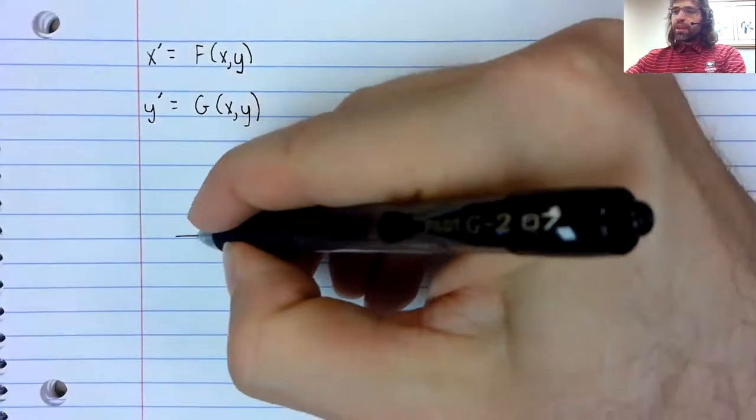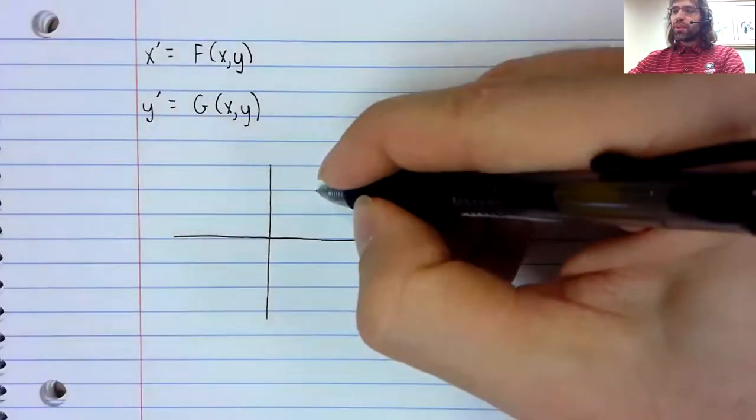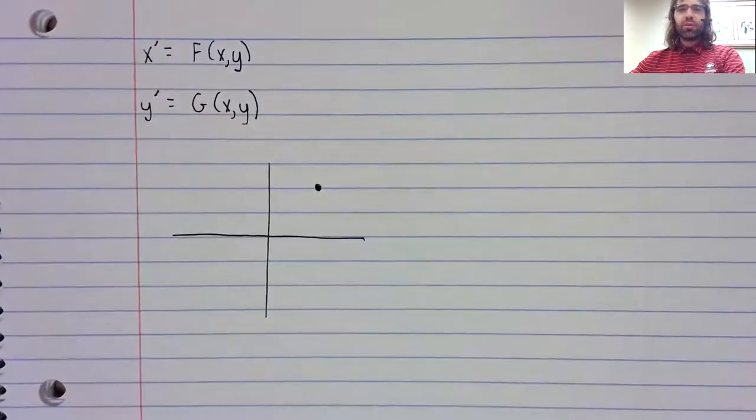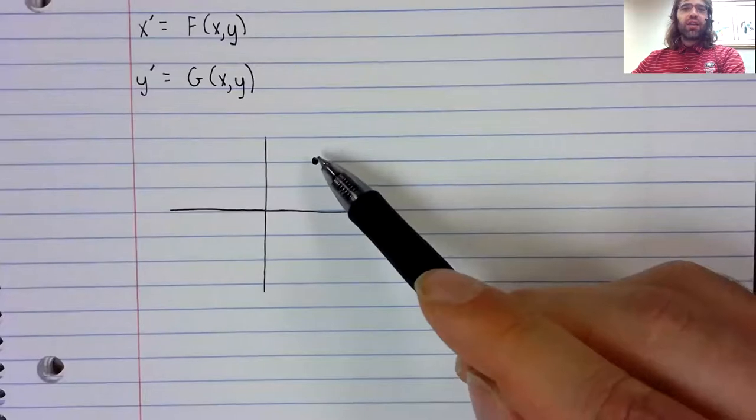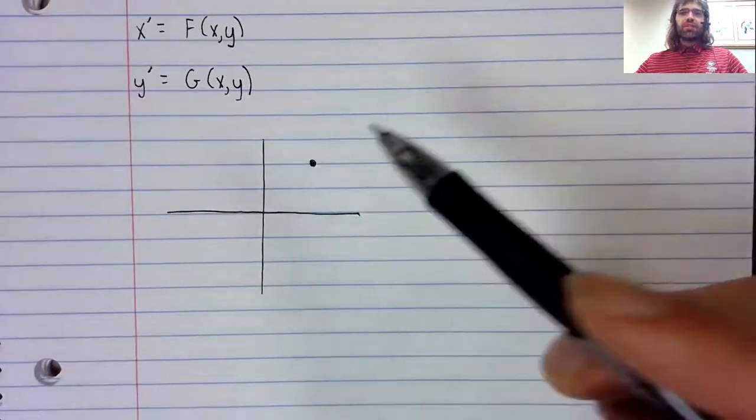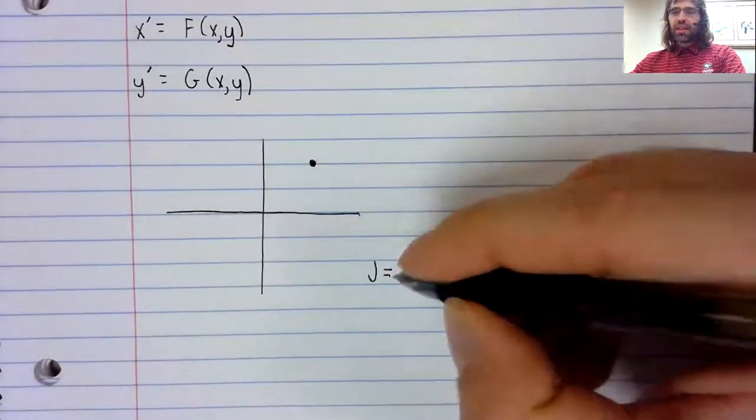And say that the system of differential equations has a fixed point, and we want to classify the stability of the fixed point. Well, we introduce the Jacobian.